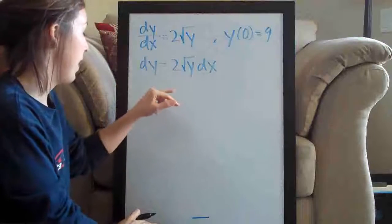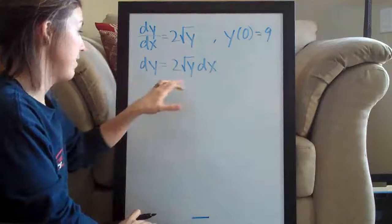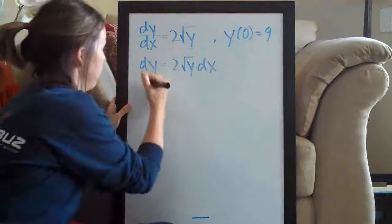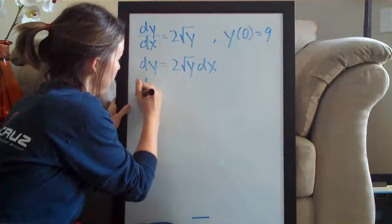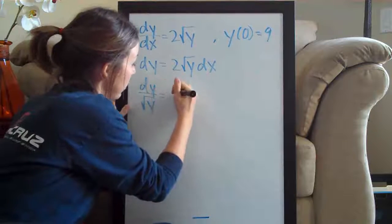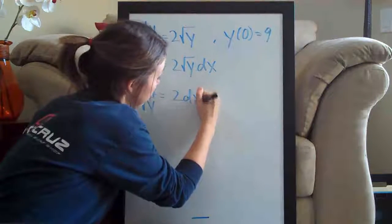Then we're going to divide both sides by the square root of y. We get dy over the square root of y equals 2 dx.